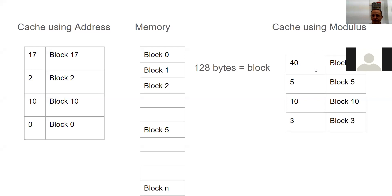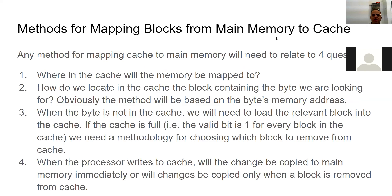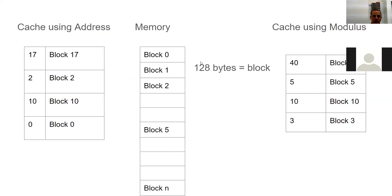We saw last time about cache and how we can use a modulo function. With direct mapping, block 40 can only go in one specific location, as opposed to fully associative where we can put any block anywhere. The main difference is that in direct mapping we jump directly to the line we need and check if it's there, whereas in full associativity we have to do a parallel search. For any method we use, we need to answer four questions: where in the cache will the memory be mapped to - that's what we just discussed.